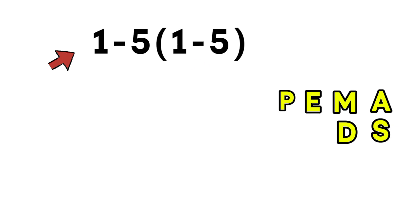So let's solve it properly. Inside the parentheses, 1 minus 5 gives us negative 4. So now the expression becomes 1 minus 5 times negative 4. We now have 1 subtraction and 1 multiplication. And according to PEMDAS, multiplication comes before subtraction, so we must multiply first.